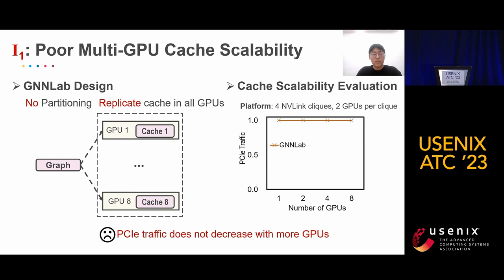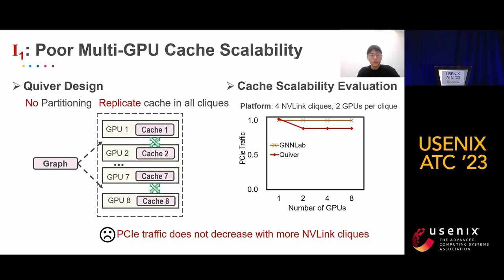Looking at the experiment in the right figure, for GNNLab, PCIe traffic does not increase with more GPUs. Quiver identifies groups of GPUs connected to each other, namely NVLink clicks, and uses NVLink to enable GPU peer access and split cache exclusively in NVLink clicks. But similar to GNNLab, the input graph in Quiver is not partitioned, so the sampled subgraphs are almost identical for all NVLink clicks. Thus, the caches are also identical for all NVLink clicks. For Quiver, the tested platform has four NVLink clicks, each with two GPUs, and PCIe traffic does not decrease with more NVLink clicks.